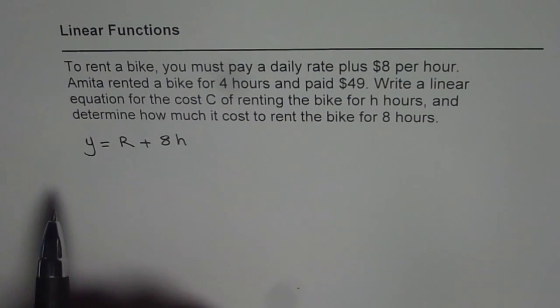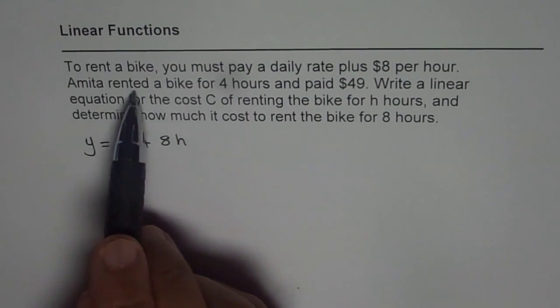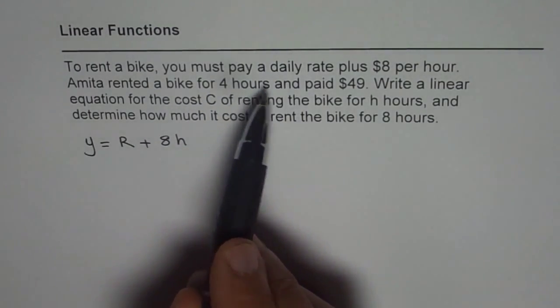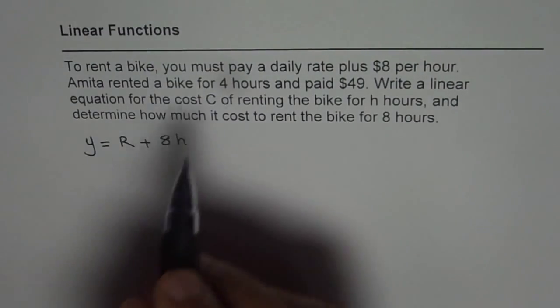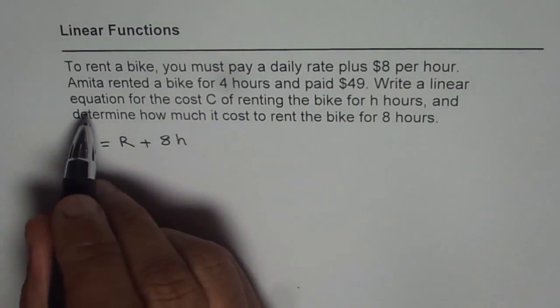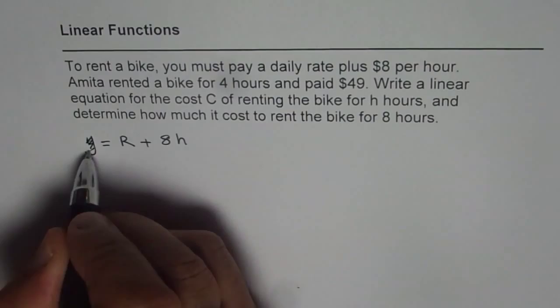Now we have some information. Amita rented a bike for 4 hours and paid $49. So that means y value. I should have written cost C since we have already mentioned. Let me change this to C. So the cost C.